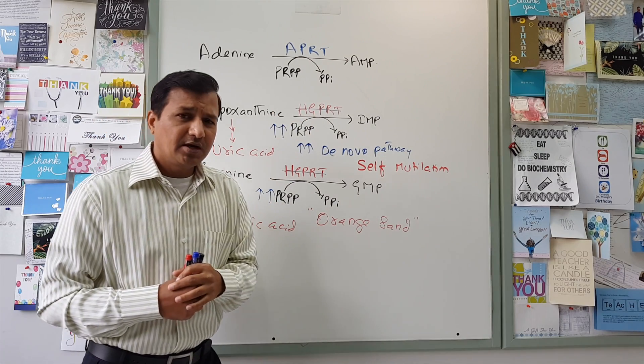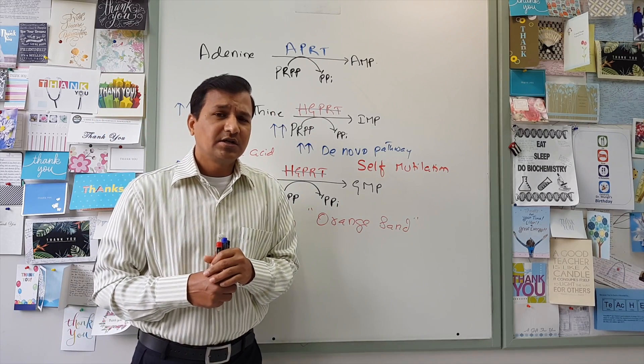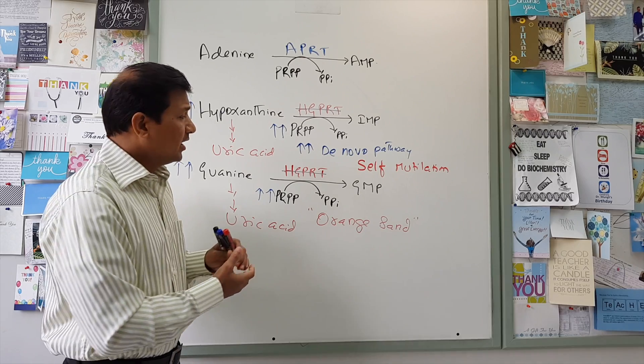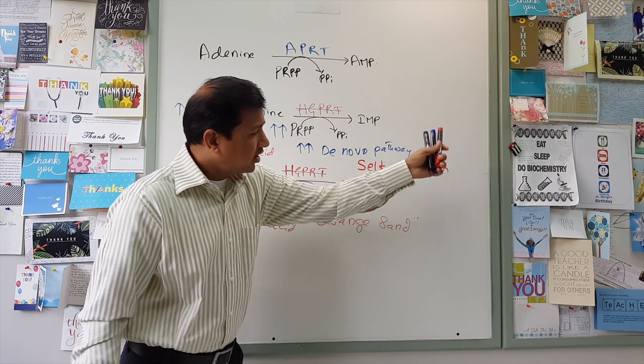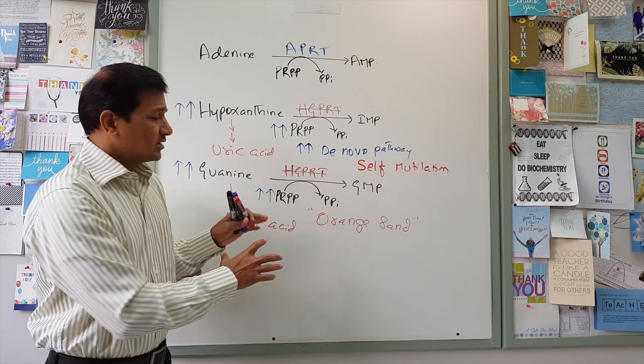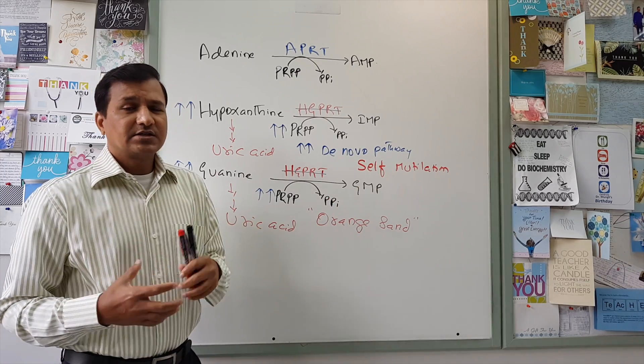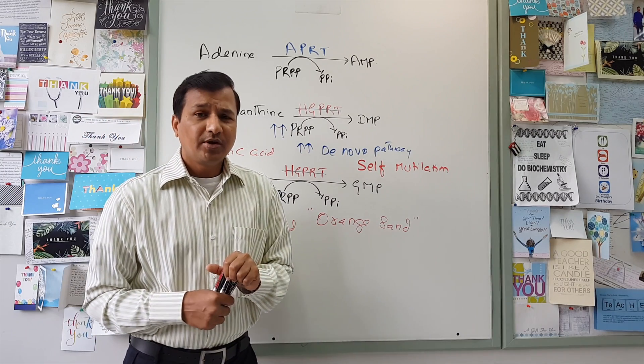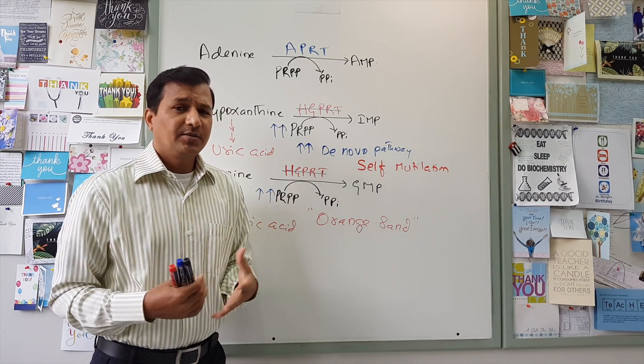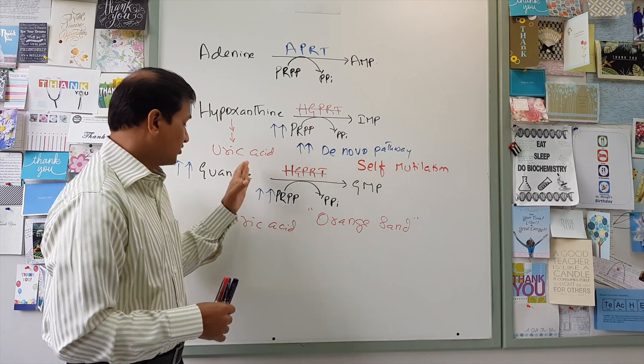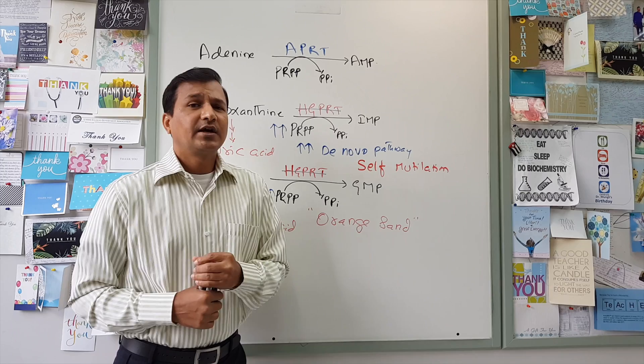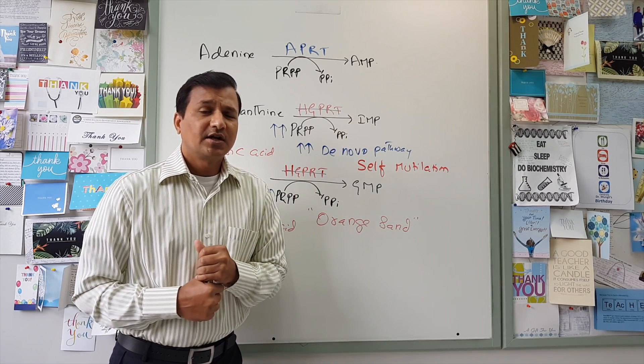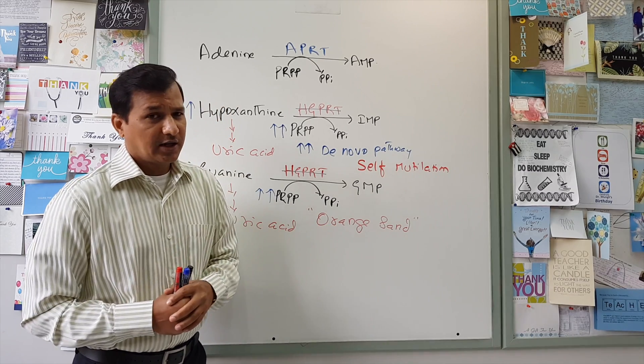Now the partial deficiency of HGPRT will be causing a disease called Kelley-Seegmiller syndrome. So in Kelley-Seegmiller syndrome, generally these neurological signs are not commonly seen, whereas urate crystals and uric acid lithiasis can be seen there. So one of the ways to decrease uric acid is using allopurinol. Allopurinol is an inhibitor of xanthine oxidase enzyme, which is involved in uric acid formation, thereby trying to decrease uric acid stones there, not necessarily decreasing the self-mutilation and other neurological signs. Allopurinol does not help there.